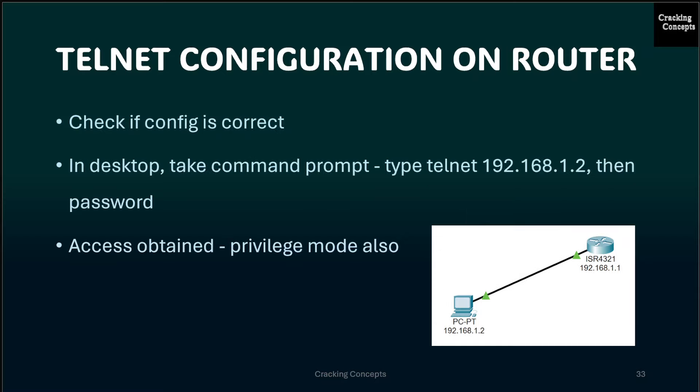After that, we check if the configuration is correct. We go to the desktop, open the command prompt, and type the Telnet command followed by the IP address of the router — the gateway address. We enter the password, and if correct, we enter the user mode of the router. Typing EN followed by the enable password enters privilege mode, confirming that the Telnet setup on the router is done successfully.